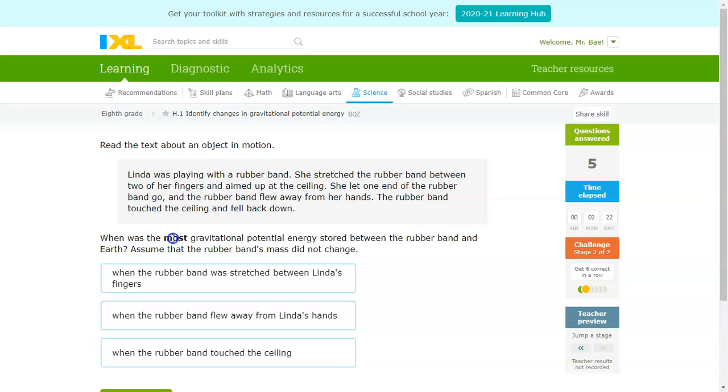Alright, this one is, once again, most gravitational potential energy. So, let's read the passage. Linda was playing with a rubber band. She stretched the rubber band between two of her fingers and aimed up at the ceiling. She let one end of the rubber band go and the rubber band flew away from her hands. The rubber band touched the ceiling and fell back down. So, the most potential energy is when it's the greatest distance between that and the Earth, so the highest spot. When the rubber band was stretched between Lisa's fingers, still on her finger, not that high. When the rubber band flew away, getting higher. When the rubber band touched the ceiling, that's the highest point. So, I'd go with that.